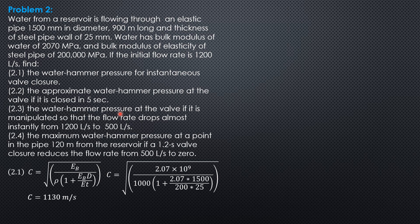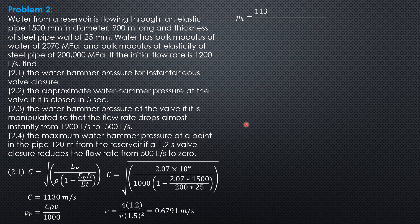For Part A, instantaneous valve closure: water hammer pressure pH = C × ρ × V / 1,000. Velocity V = 4Q / (π D²) = 4 × 1.2 / (π × 1.5²) = 0.6791 m/s. Substituting: pH = 1,130 × 1,000 × 0.6791 / 1,000. The water hammer pressure for instantaneous valve closure is 764.4 kilopascals.